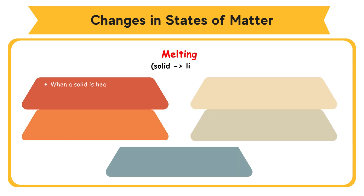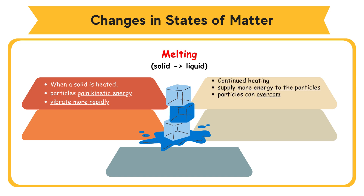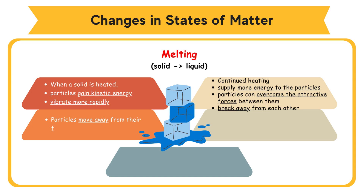Melting. When a solid is heated, the particles gain kinetic energy and vibrate more rapidly. Continued heating will supply more energy to the particles, until the particles can overcome the attractive forces between them and break away from each other. Particles move away from their fixed positions. At this point, the solid starts to change to a liquid. The temperature at which a solid changes to a liquid is called the melting point.